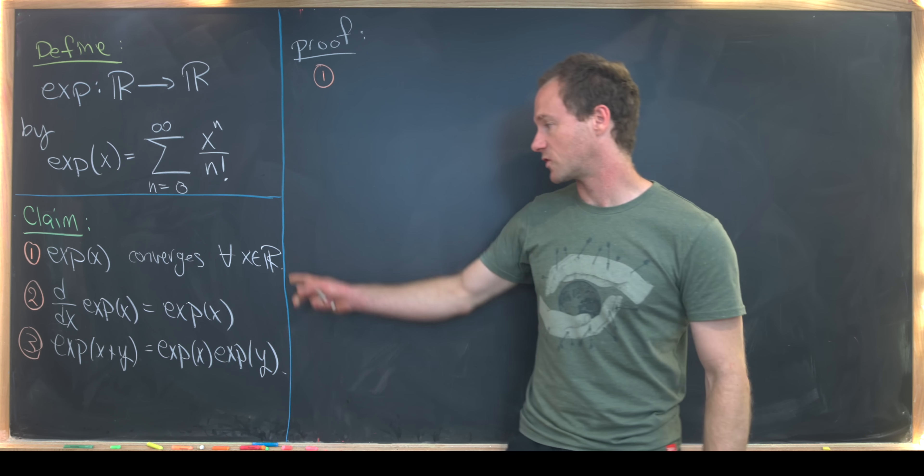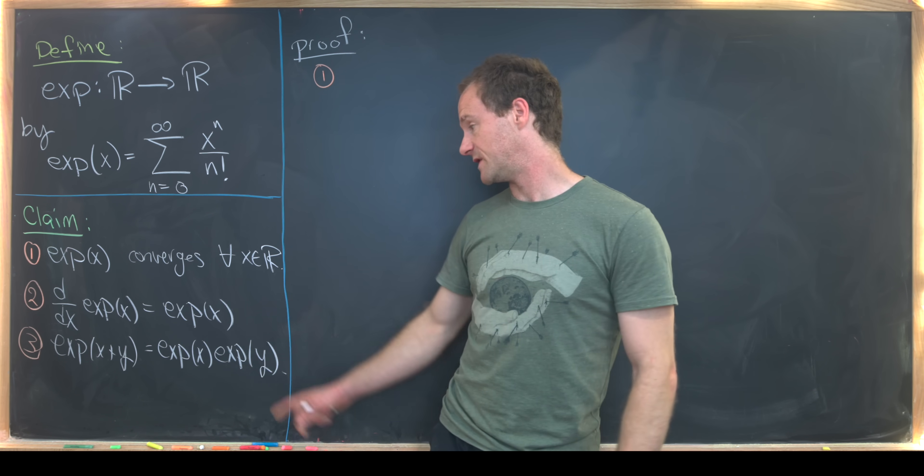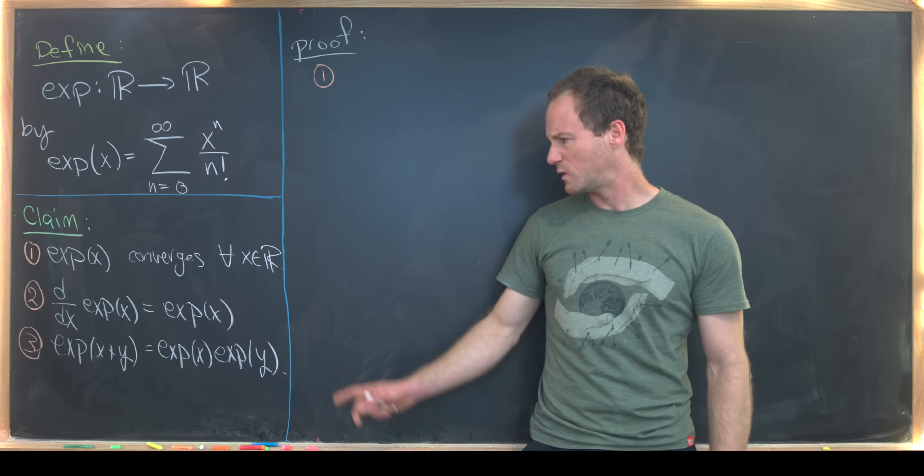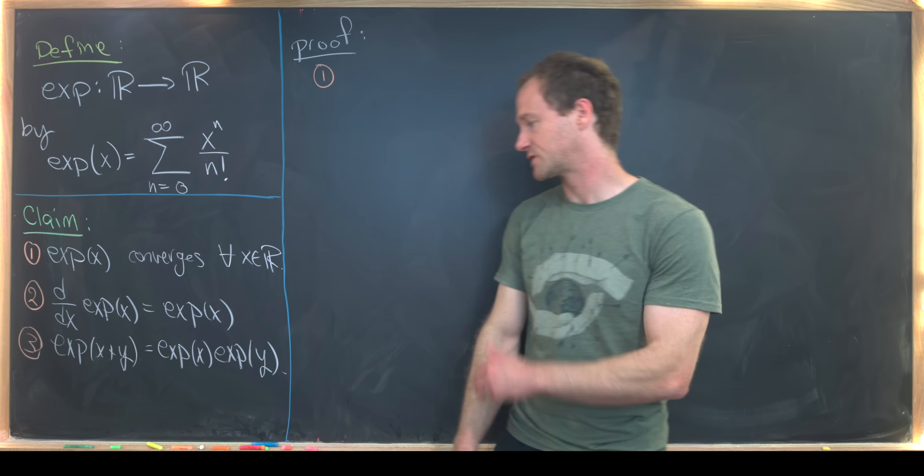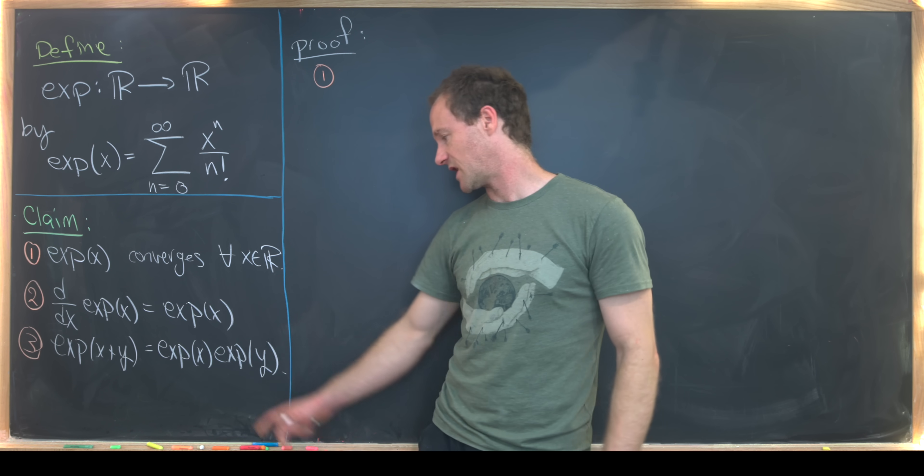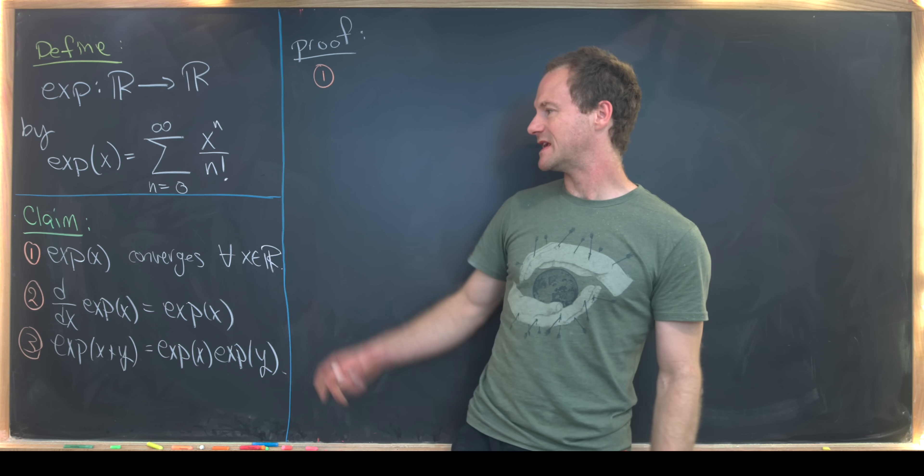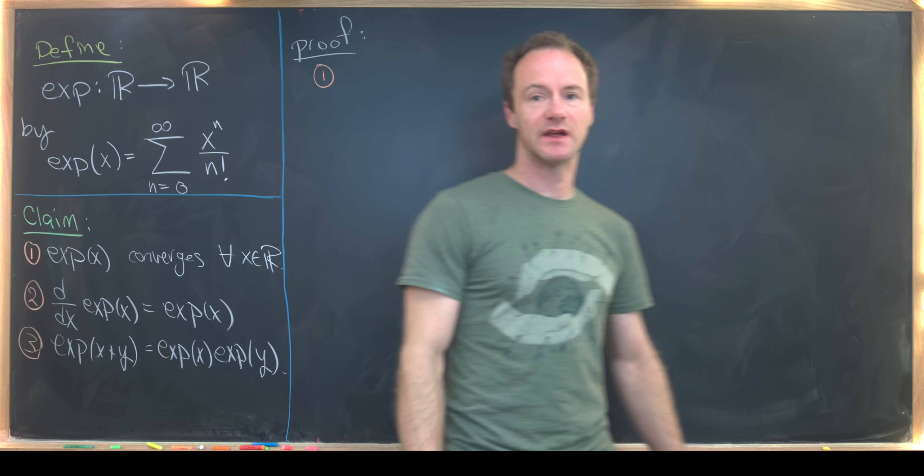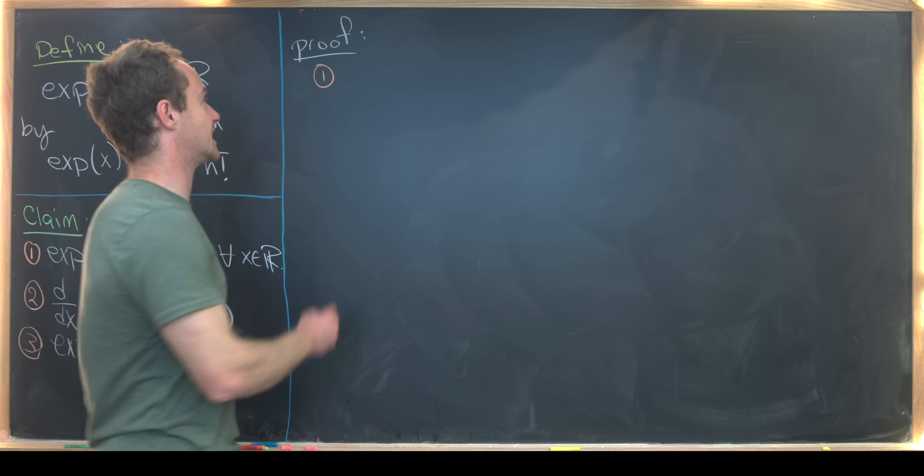So exp(x) converges for all x in R. The derivative is equal to itself. And then we've got this sum product rule. So exp(x+y) is exp(x) times exp(y). So let's maybe get to the claim of the first bit. And we're going to use the standard strategy of using the ratio test.